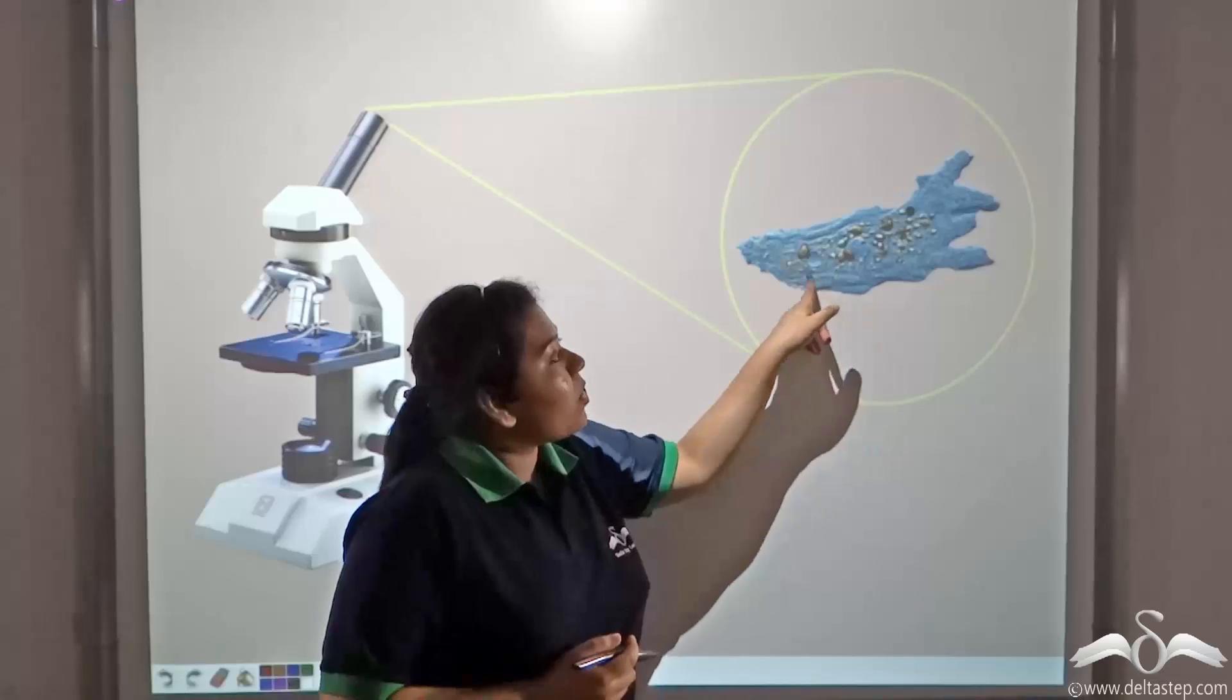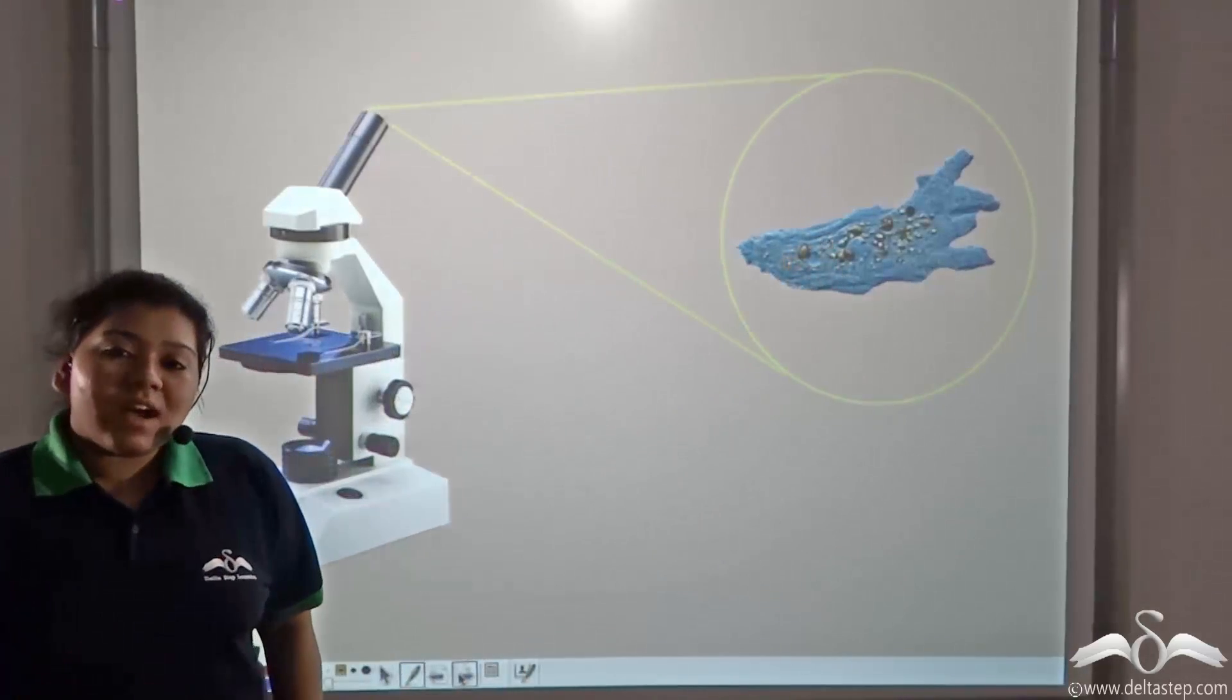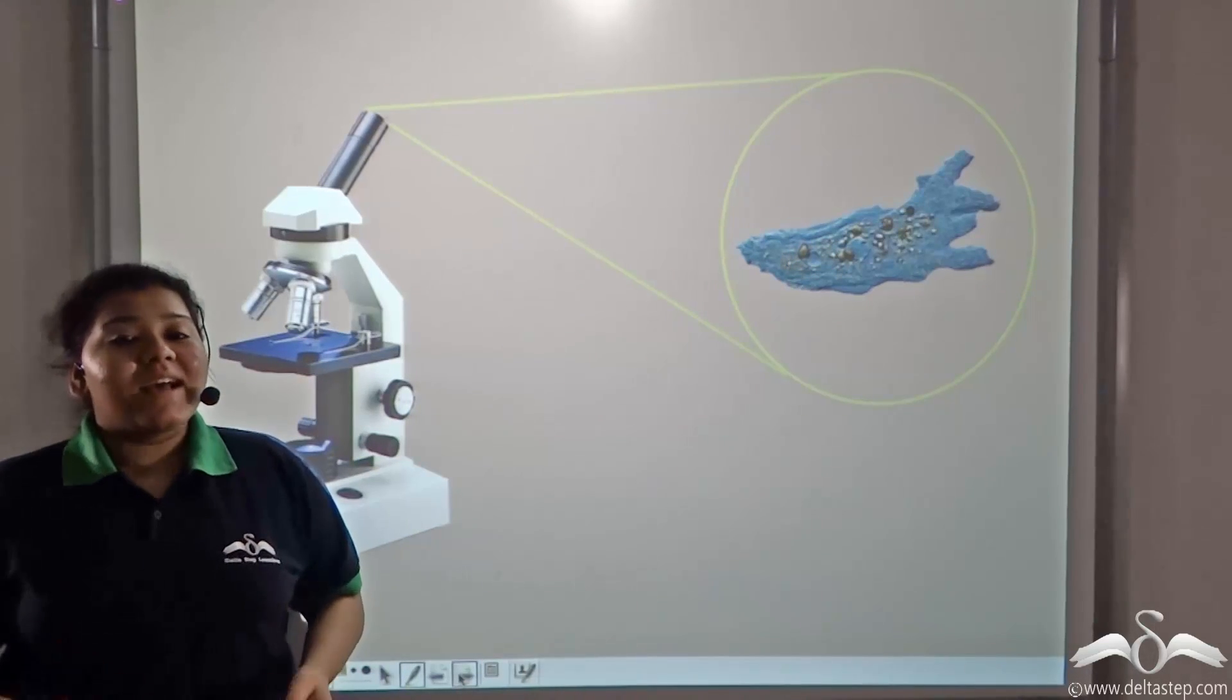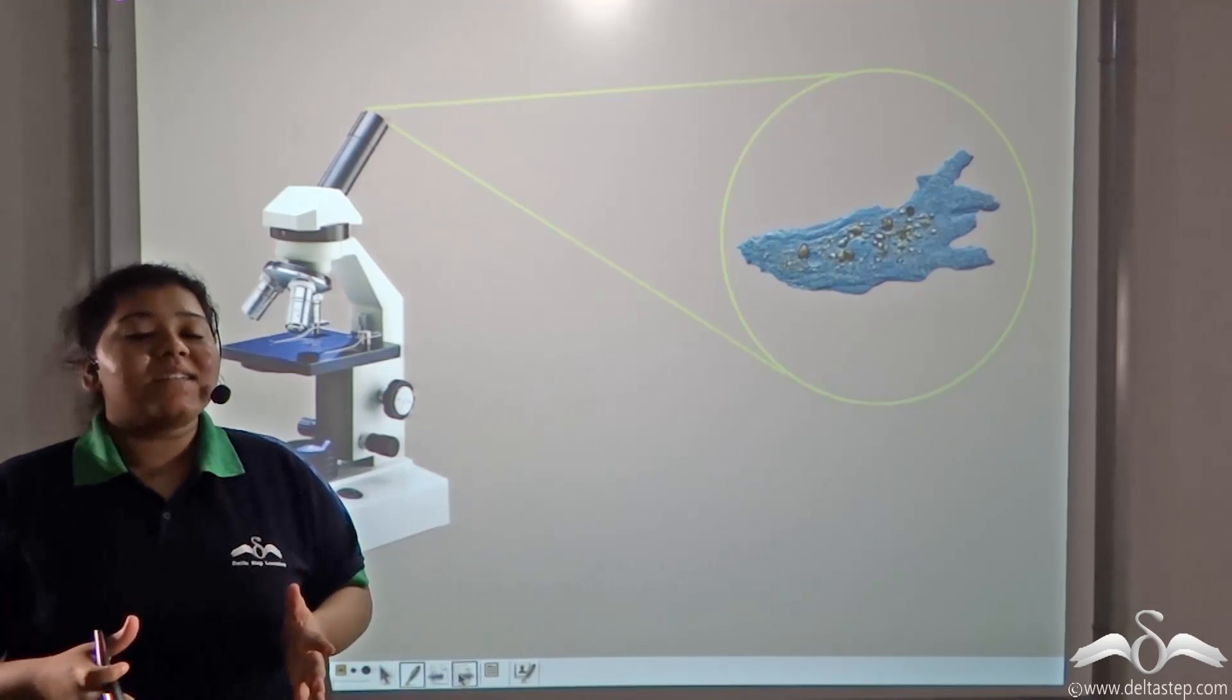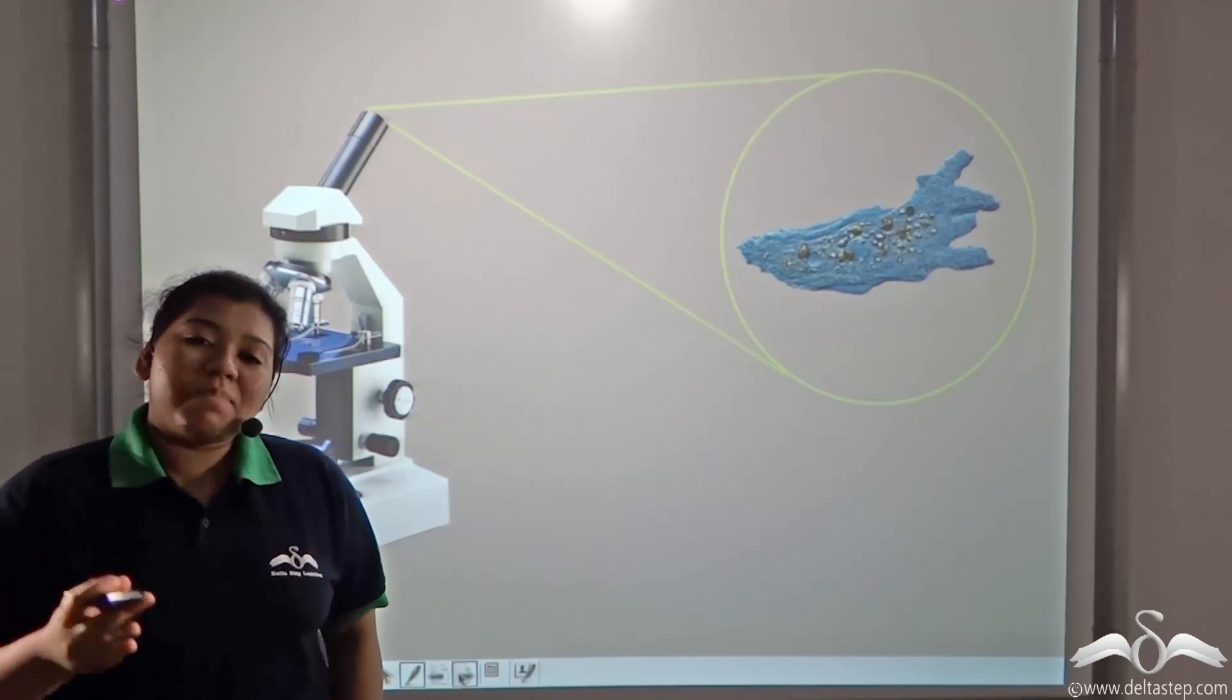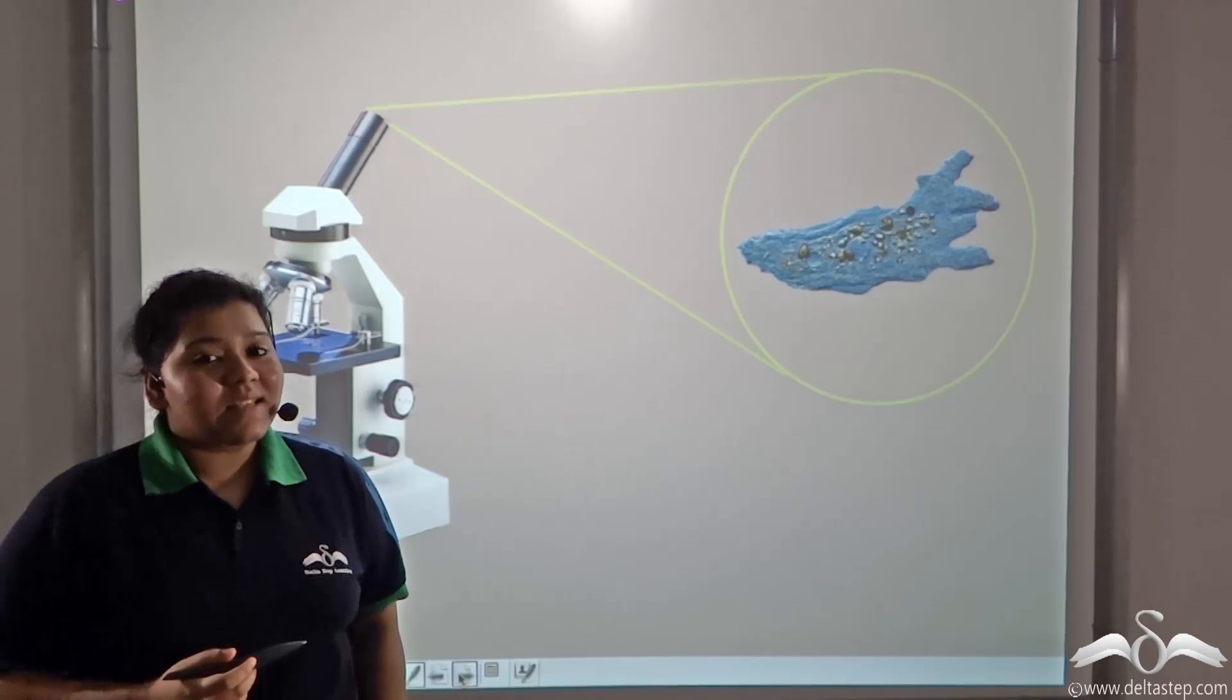Now, these microorganisms float around singularly, as in only one cell, but they are not as compact or they do not form clusters like plant cells or animal cells.